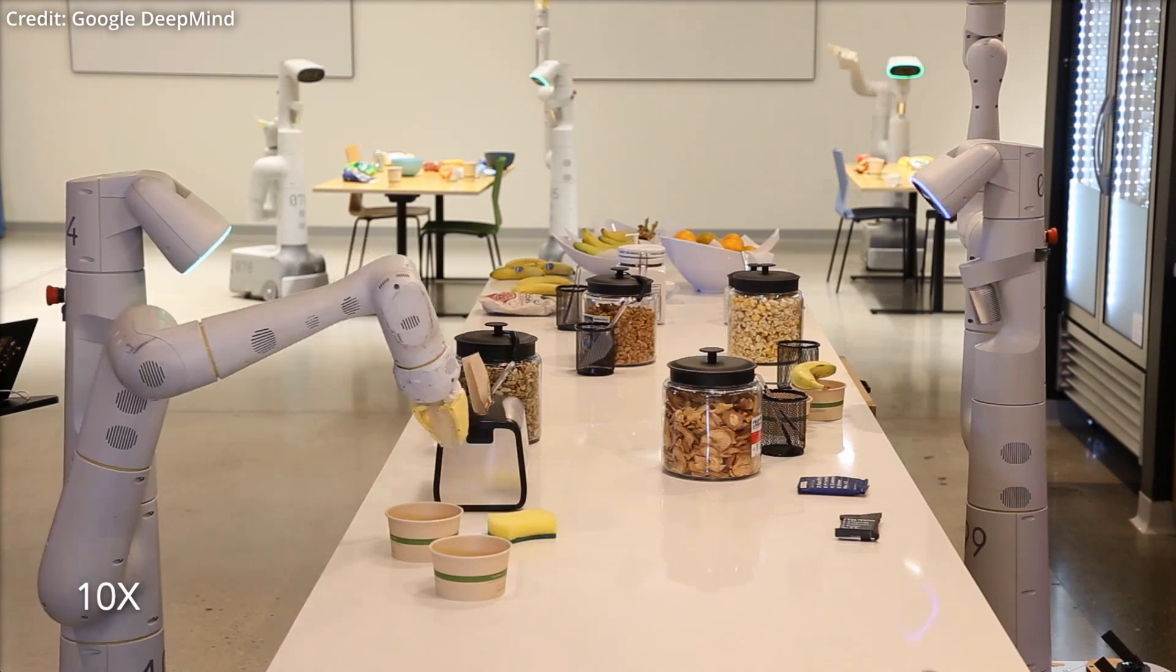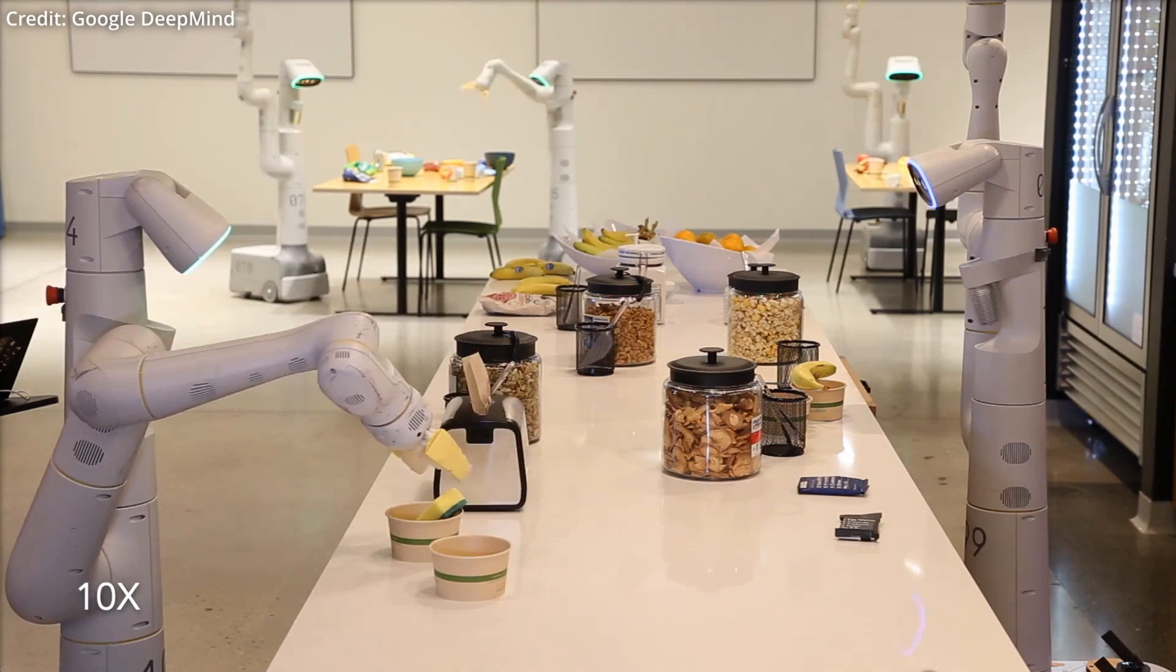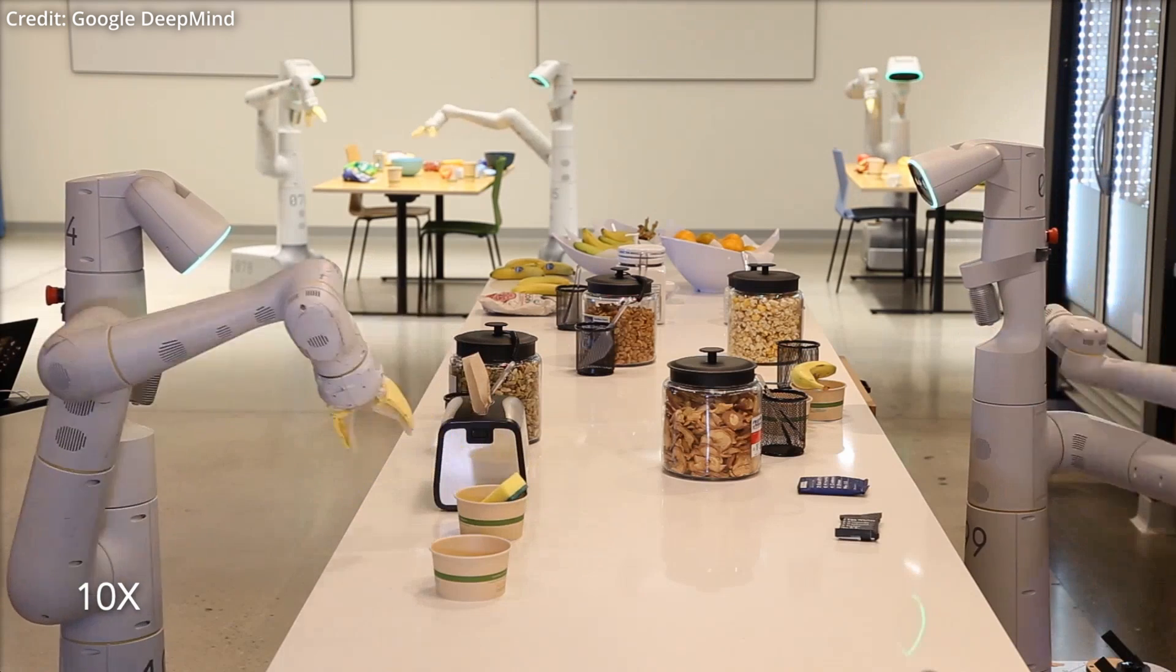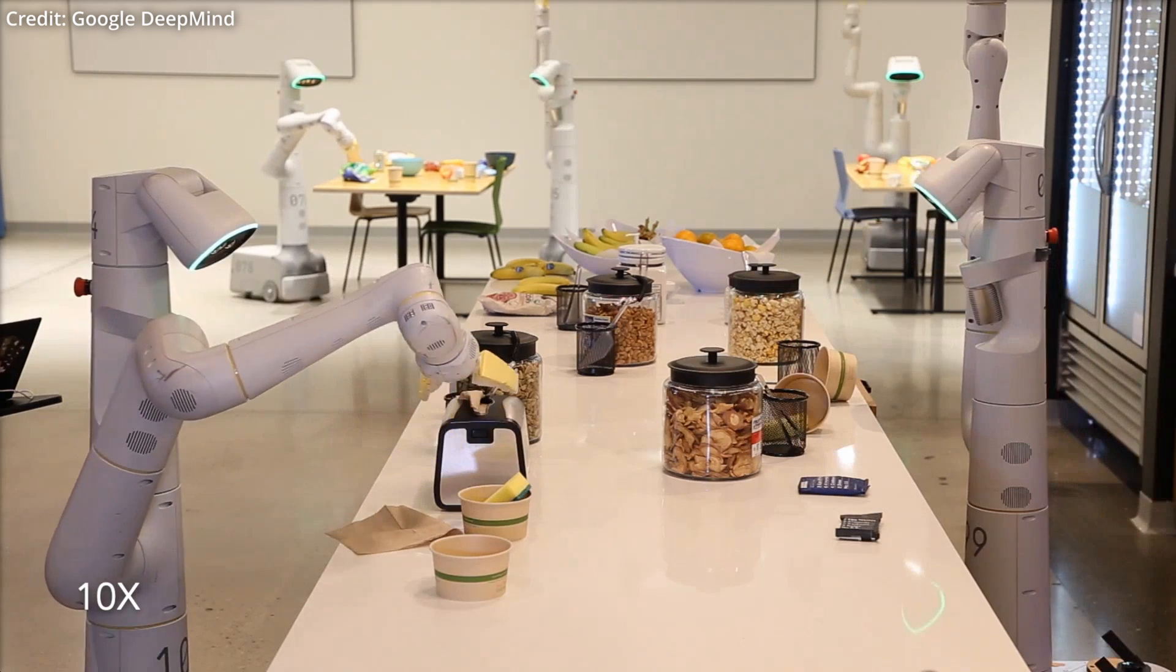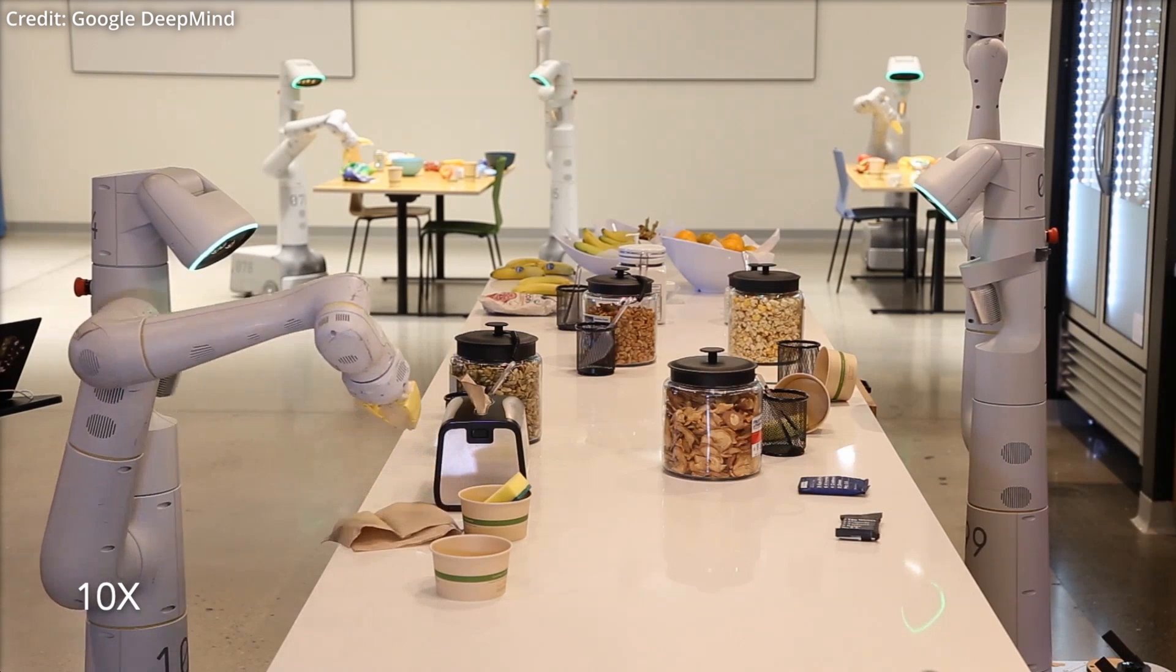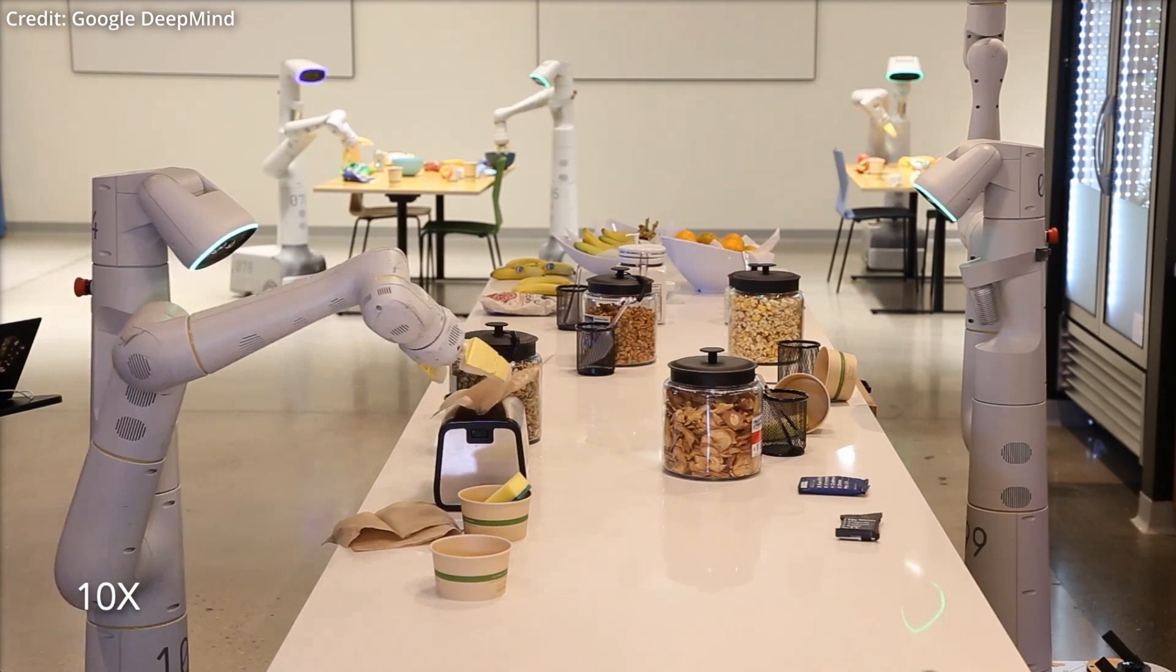Crucially, AutoRT incorporates safety protocols, including a robot constitution inspired by Isaac Asimov's three laws of robotics, ensuring human and environmental safety during task selection and execution.